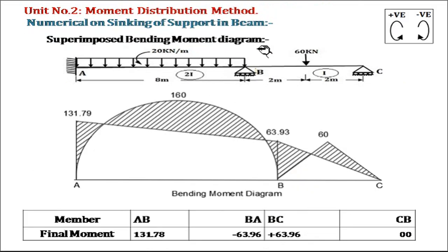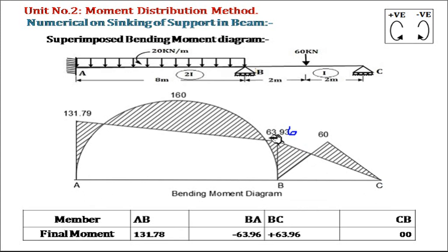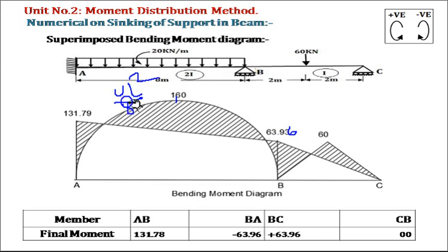Next, we draw the superimposed bending moment diagram. First we draw a horizontal line. At support A the moment is 131.78, shown above the line. At point B it is 63.96, also shown above the line. At CB the value is 0. These points are connected by straight lines to form the fixed bending moment diagram. Next we draw the free bending moment diagram, which is due to the given loading. In member AB, loaded by a uniformly distributed load, the free BMD value is WL²/8.